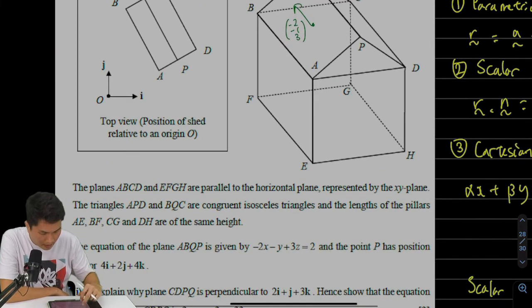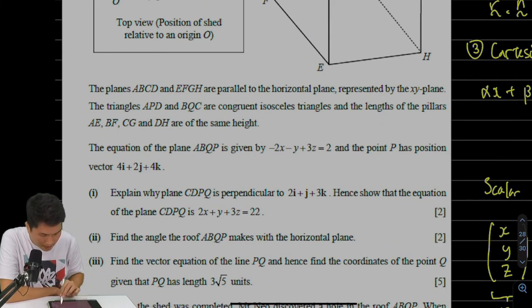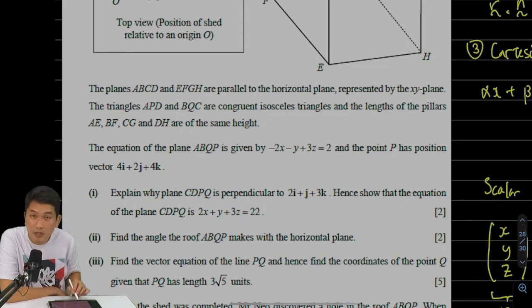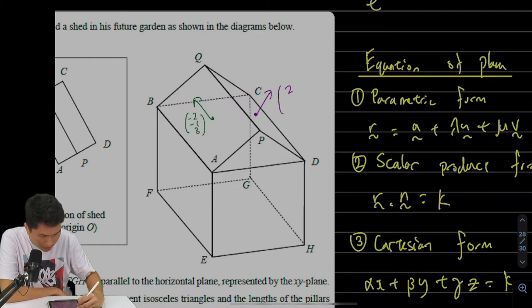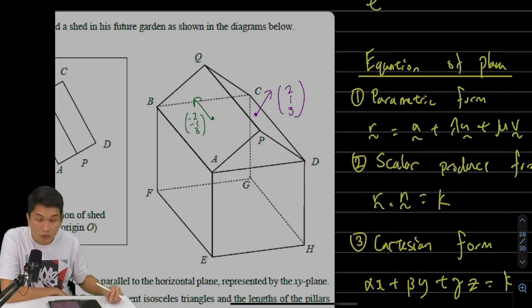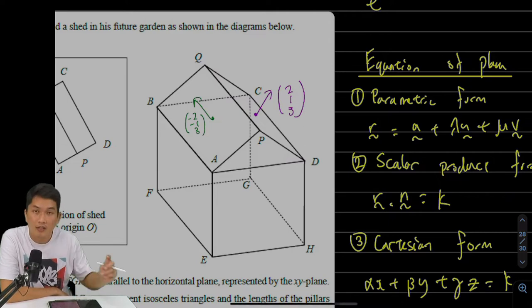Part one claims that the other slanted roof CDPQ will have a normal vector of (2, 1, 3), or 2i + j + 3k. So it claims this is positive two, positive one, and positive three. Why is that? Why should these be positive while the other normal vector has negative components? Let's take a look.